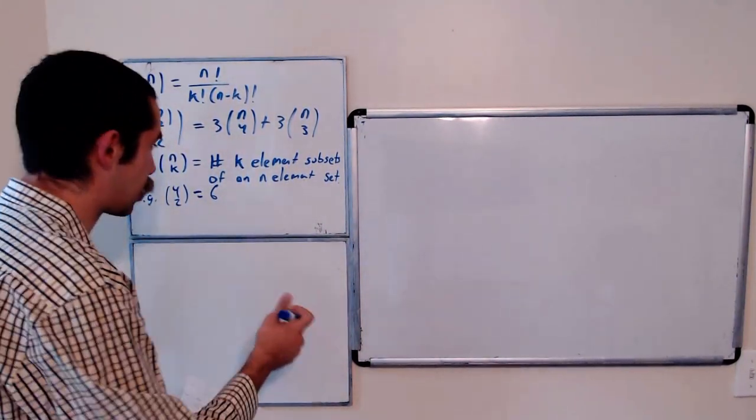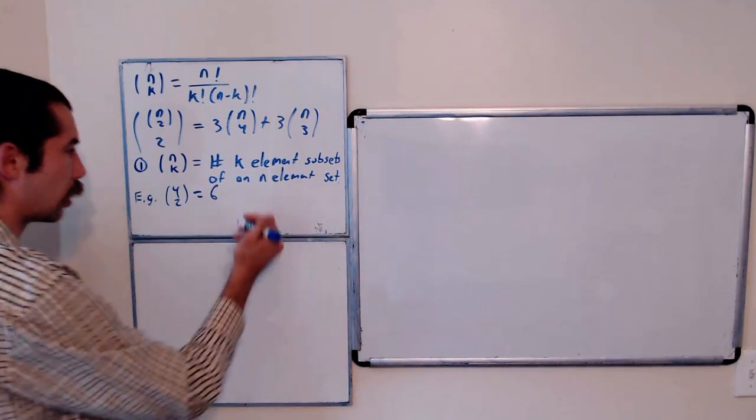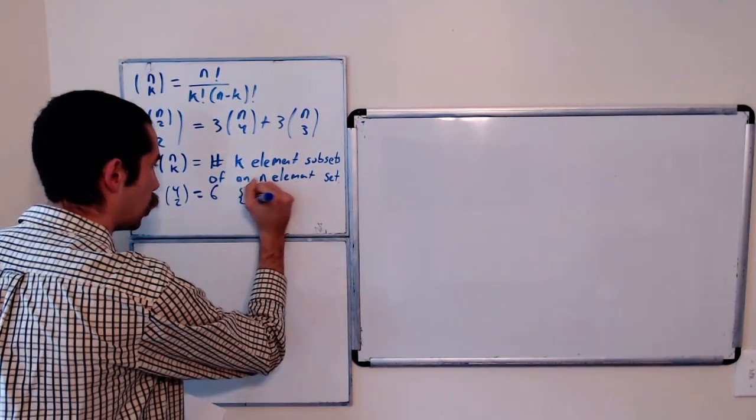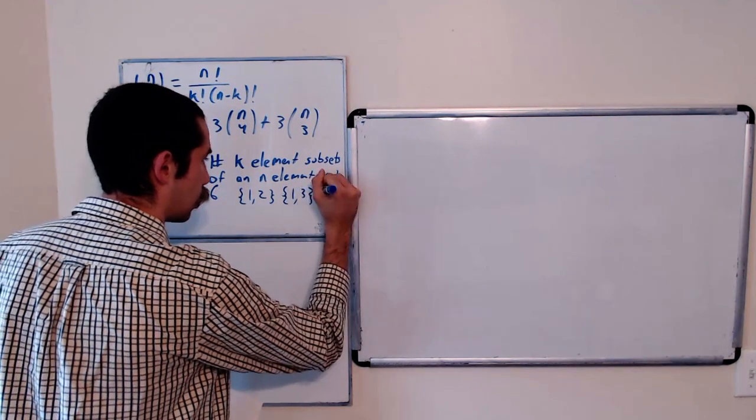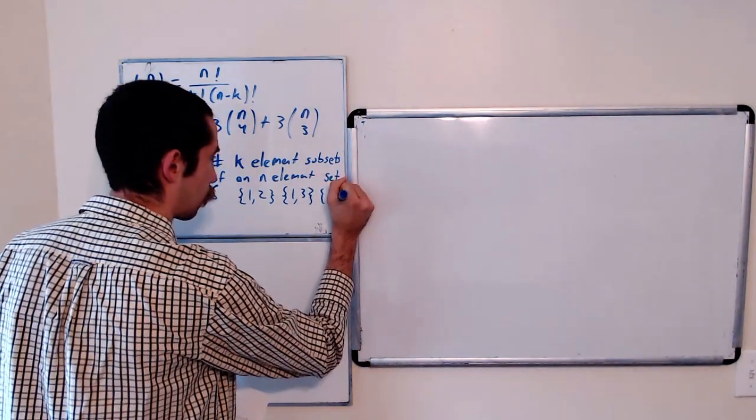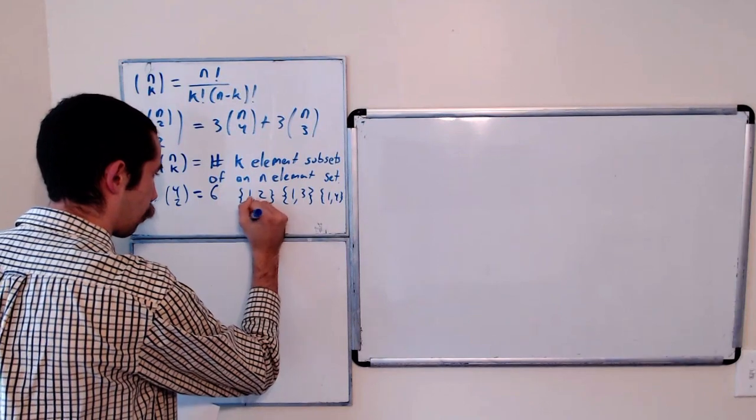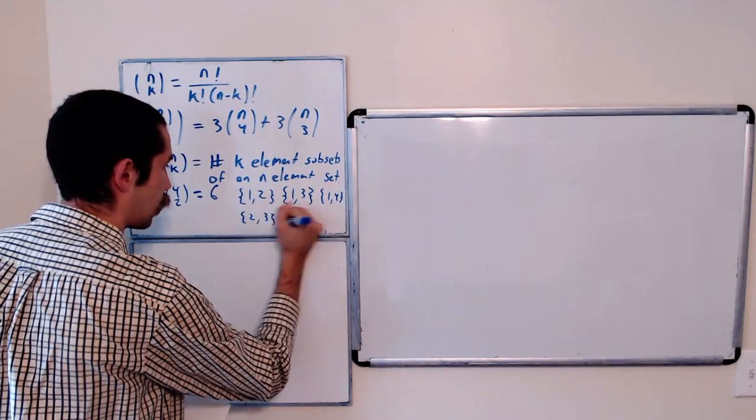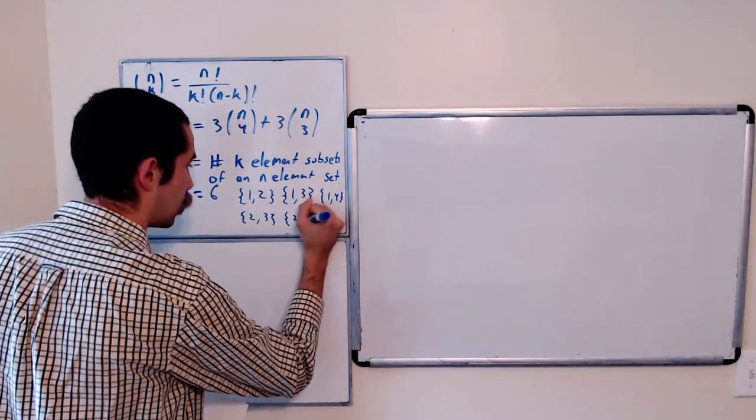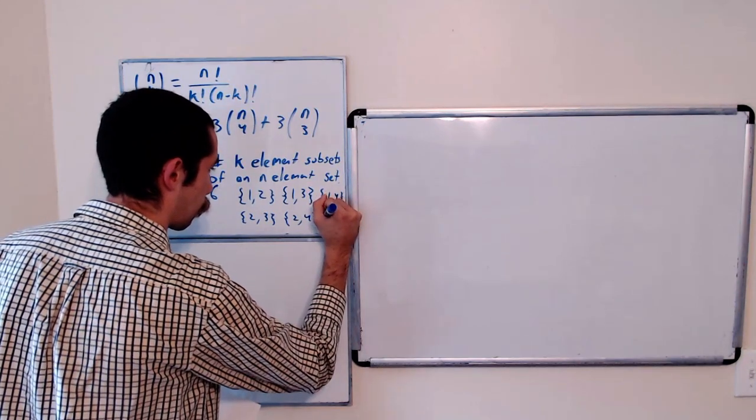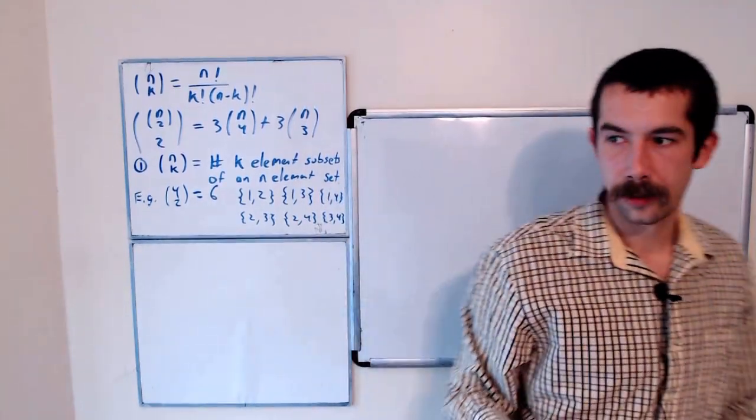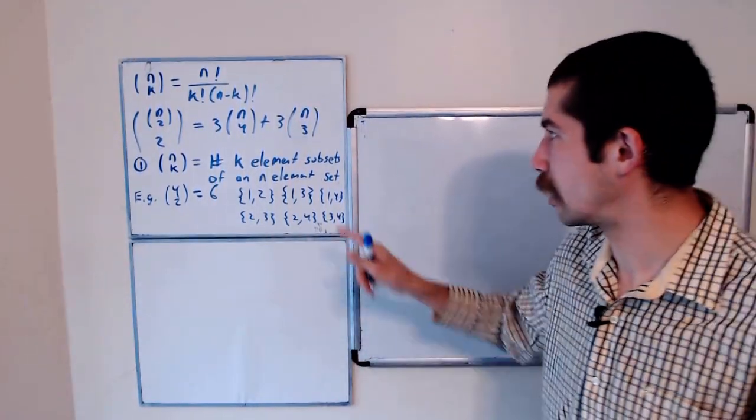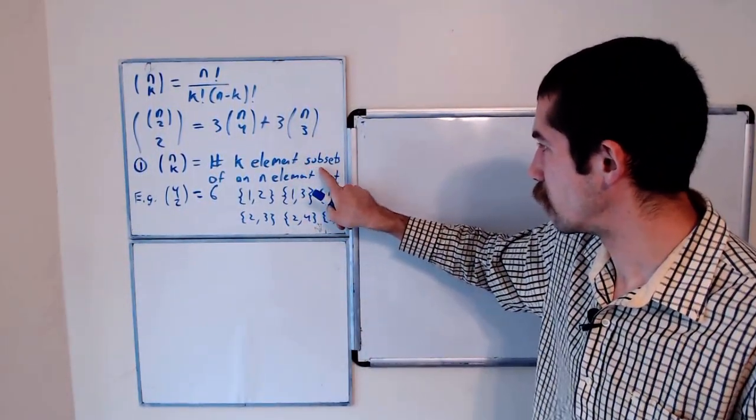That would be 1, 2, 1, 3, 1, 4, 2, 3, 2, 4, and 3, 4. And it's going to be a lot easier for us to prove this identity if we use this fact. So we're going to provide a combinatorial proof.